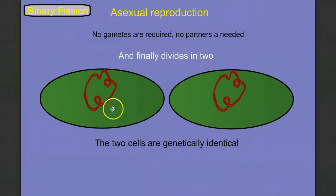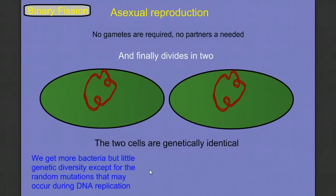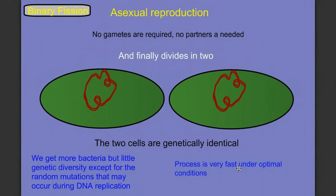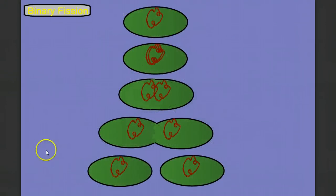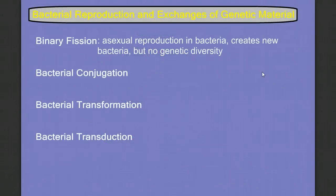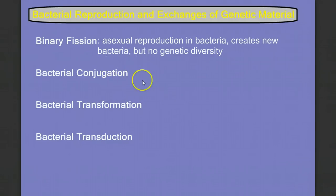These two cells are genetically identical to each other. So while binary fission can create a very large number of bacteria in a very short amount of time, it doesn't create a lot of genetic diversity within our bacterial populations — outside of the chance random mutations that happen during DNA replication. Under optimal conditions, the right temperatures and the right nutrient material, bacterial populations can rapidly divide. So how do we get genetic diversity? The answer will come in the other three processes.